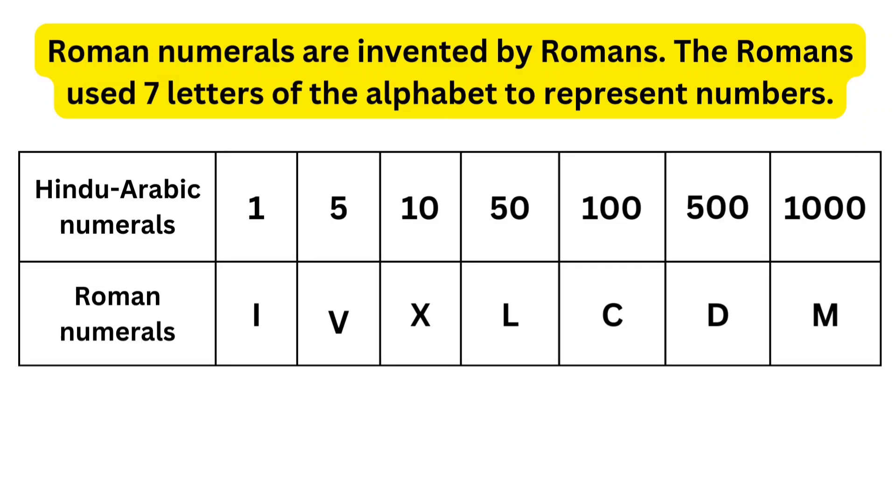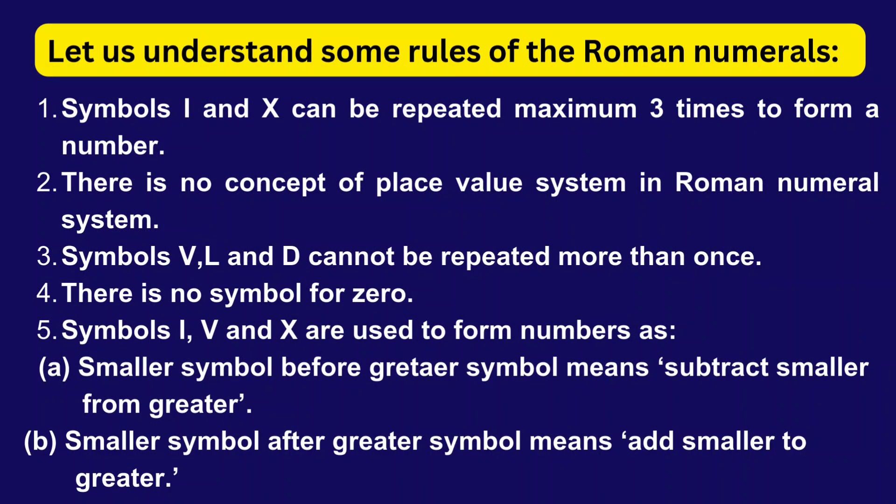Roman Numerals are invented by Romans. The Romans use seven letters of the alphabet to represent numbers. Symbols I and X can be repeated maximum three times to form a number. There is no concept of place value system in Roman numeral system.